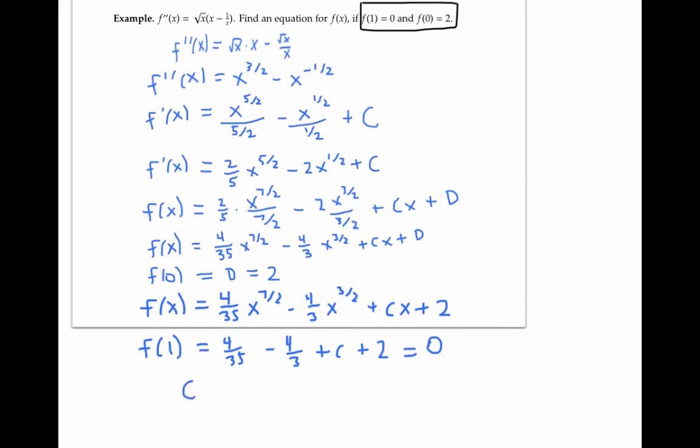Which means that C is negative two minus 4 35ths plus four thirds, which simplifies to minus 82 over 105.